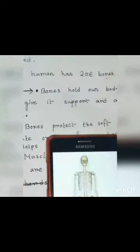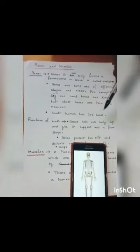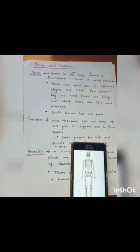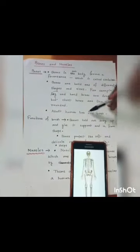Next point. Adult human has 206 bones. But a newborn baby has more than 300 bones. Gradually many of these bones fuse together and stand at 206.